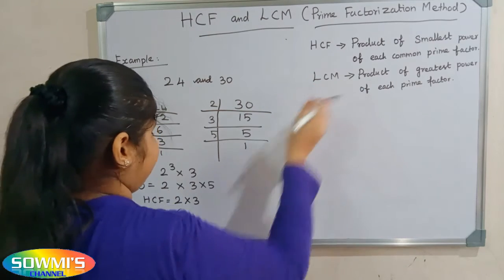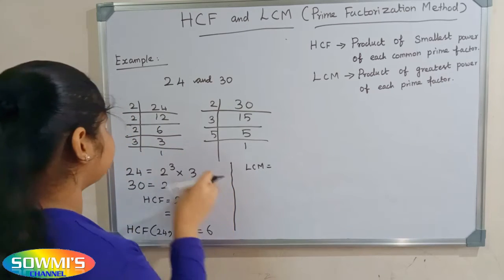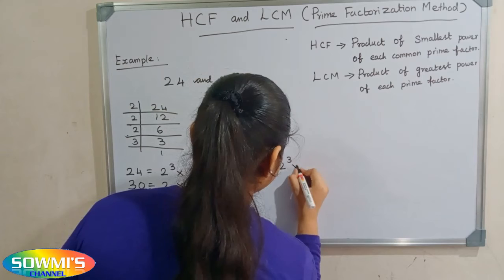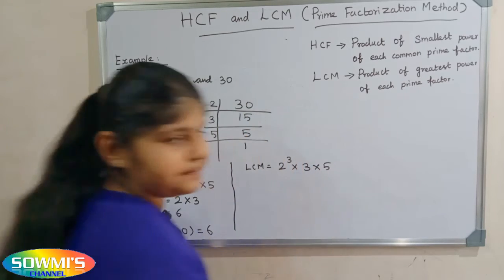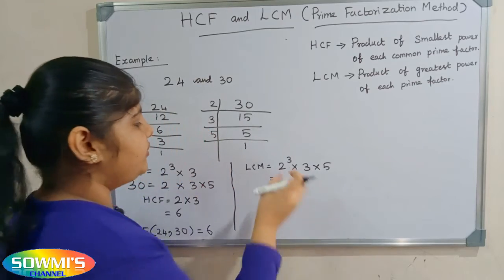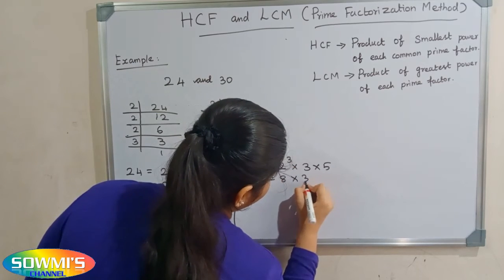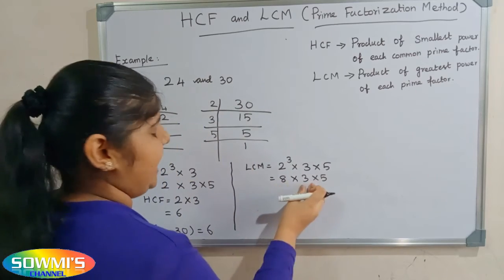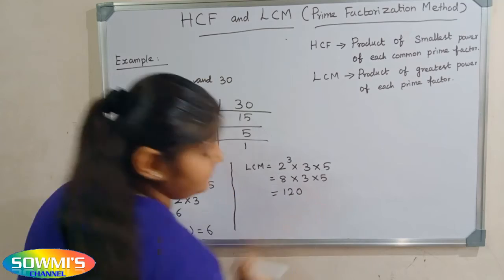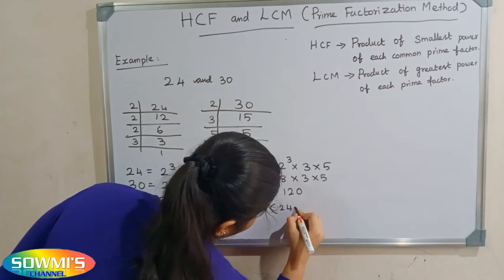Next we will find LCM. The greatest power of each prime factor is 2 cubed, 3, and 5. So we have to multiply 2 cubed × 3 × 5. 2 cubed is 2 × 2 × 2, which is 8. So 8 × 3 × 5 — 8 threes are 24, and 24 fives are 120. Therefore, the LCM of 24 and 30 is 120.